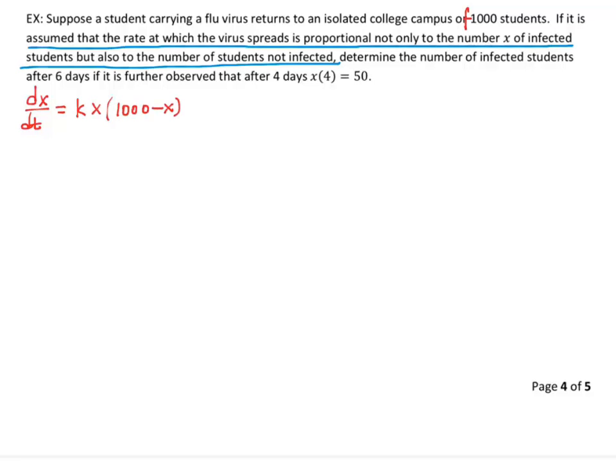Now why is that? It's proportional, so there's a constant of proportionality. It is proportional to the number infected, which is x, and also the number not infected. And if the campus has 1,000 students and x are infected, then 1,000 minus x is the number not infected. And this is exactly our logistic equation, only it's in carrying capacity form, not A and B form.